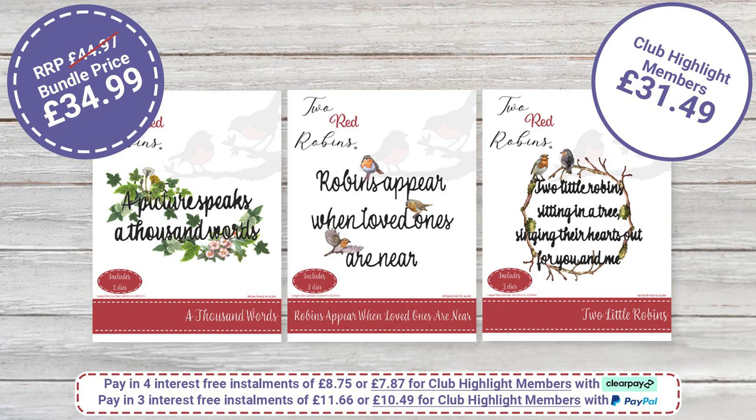So let's have another look at the breakdown of these dies. Within the Words for a Loved One collection, if you were to buy each one of these dies separately, you would be looking at total price of £44.97. But today's bundle price, if you put all three together, you're looking at £34.99.